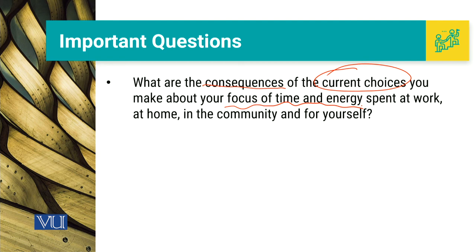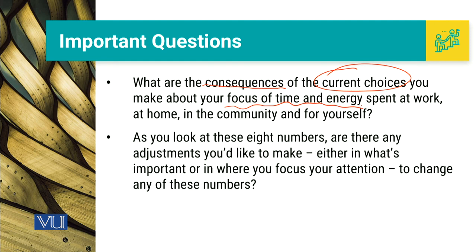Because agar yeh imbalance hoga, to woh imbalance hamare liye mushkilat, hamare liye challenges woh create kar dega. The second important thing we need to know — as you look at these 8 numbers that we filled in previously — are there any adjustments you would like to make? Ho sakta hai ki mein apni priorities ko jab define kar raha houn, or apne time and resources ko jab mein discuss kar raha houn, to it might be possible ki mein unko ab tabdil karna chahta houn. Because mujhe yeh dikhe ki mainne kisi cheez ko importance zyada di hai, lekin uske liye mere paas waqt aur resources woh nahi hain.